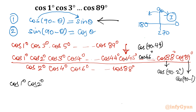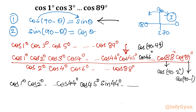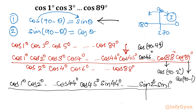So I write cos 1° × cos 2° up to cos 44°, then cos 45°, and then cos 46° becomes sin 44°, continuing down until cos 88° becomes sin 2° and cos 89° becomes sin 1°. The denominator remains unchanged: cos 2° × cos 4° × cos 6° up to cos 88°.